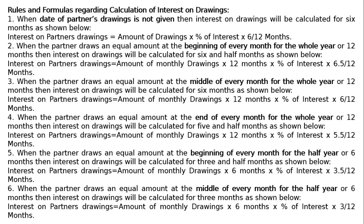The sixth rule: when the partner draws an equal amount at the middle of every month for 6 months, then interest on drawings will be calculated for 3 months. Interest on partner's drawings equals amount of monthly drawings multiplied by 6 months multiplied by percentage of interest multiplied by 3 upon 12 months.